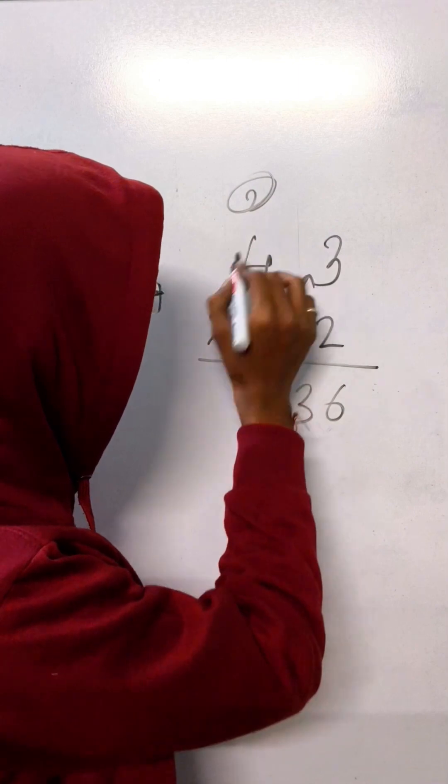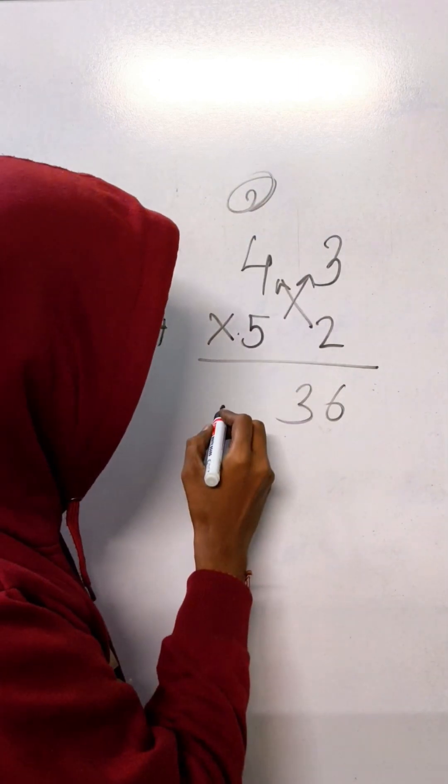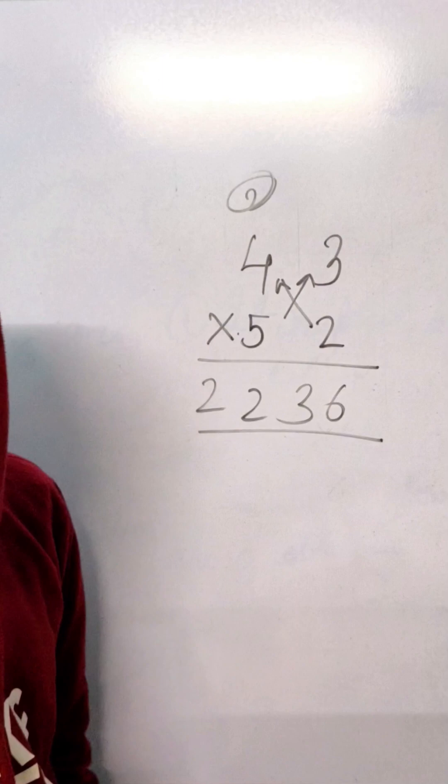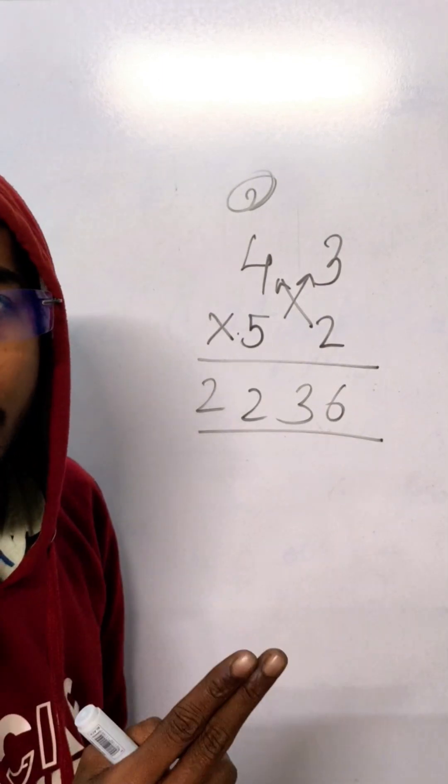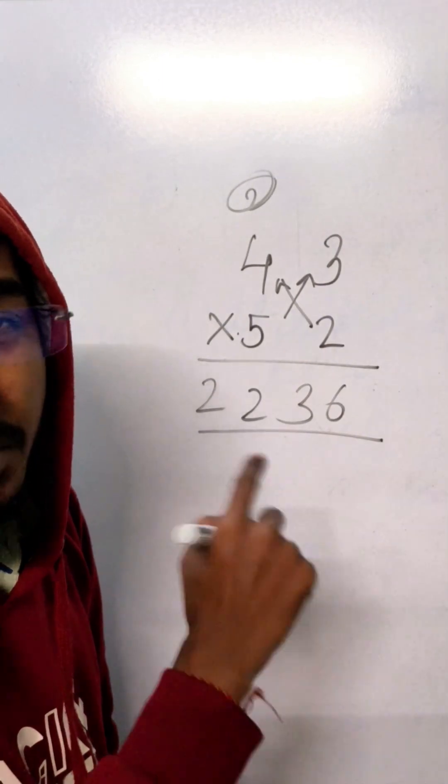3 carry 2. Now 5 4s are 20. 20 plus 2 is 22. So see here you can multiply the 2 digit numbers in a fast way and in an efficient way.